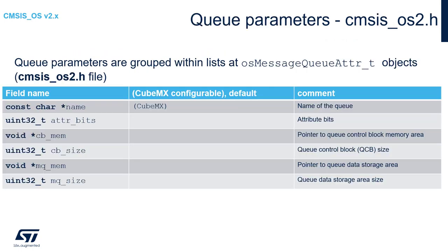Let's look at the queue parameters grouped within the structure osMessageQueueAttr_t, defined in the cmsis_os2.h file. During queue creation we specify only the name, which is the only configurable part available in CubeMX. The remaining attributes — attribute bits, pointer to the queue control block area, control block size, pointer to the data storage area, and the data storage size — are all set by the application after queue creation.